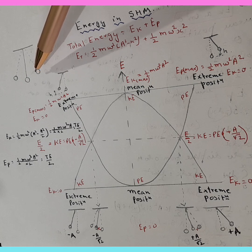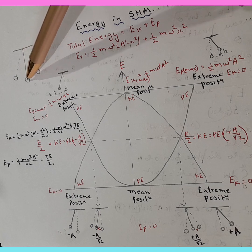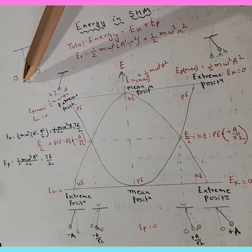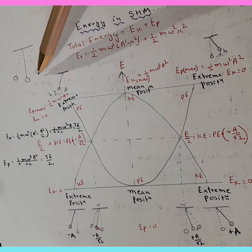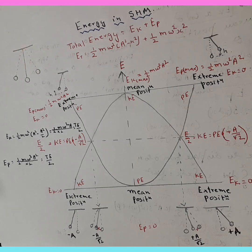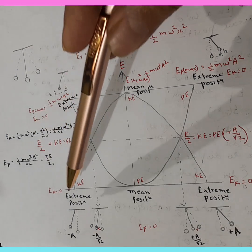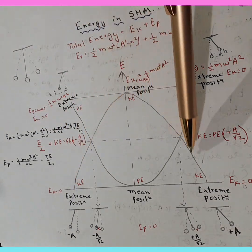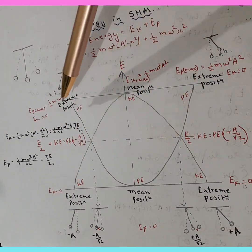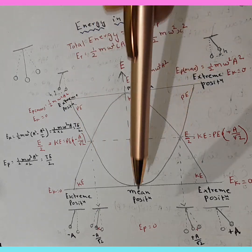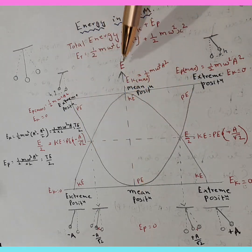So there is conversion of potential energy to kinetic energy, kinetic energy to potential energy, and back again. Obviously we would be having two curves — one for kinetic energy and another for potential energy. This is the energy profile.